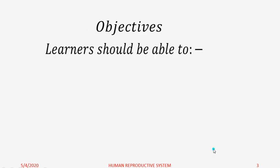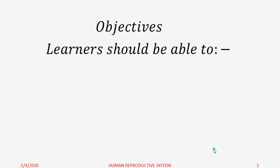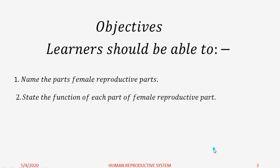After this lesson, the learner should be able to: Number 1, name the parts of the female reproductive system; Number 2, state the function of each part of the female reproductive system. Let us begin our lesson — we shall look at the female reproductive system.